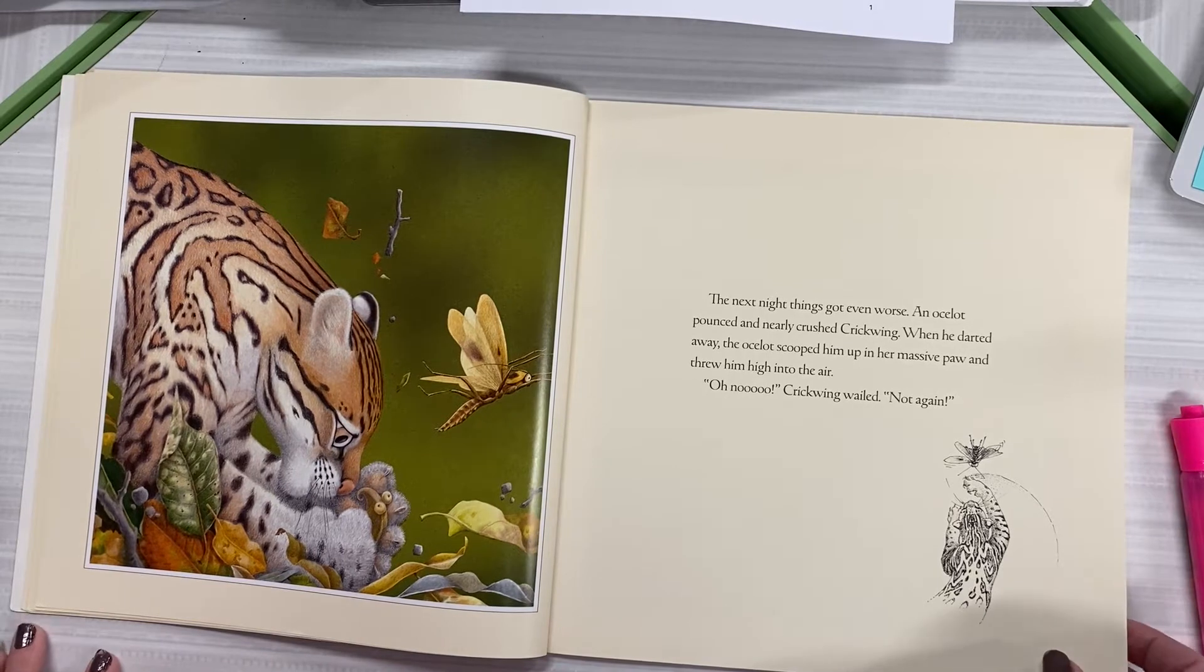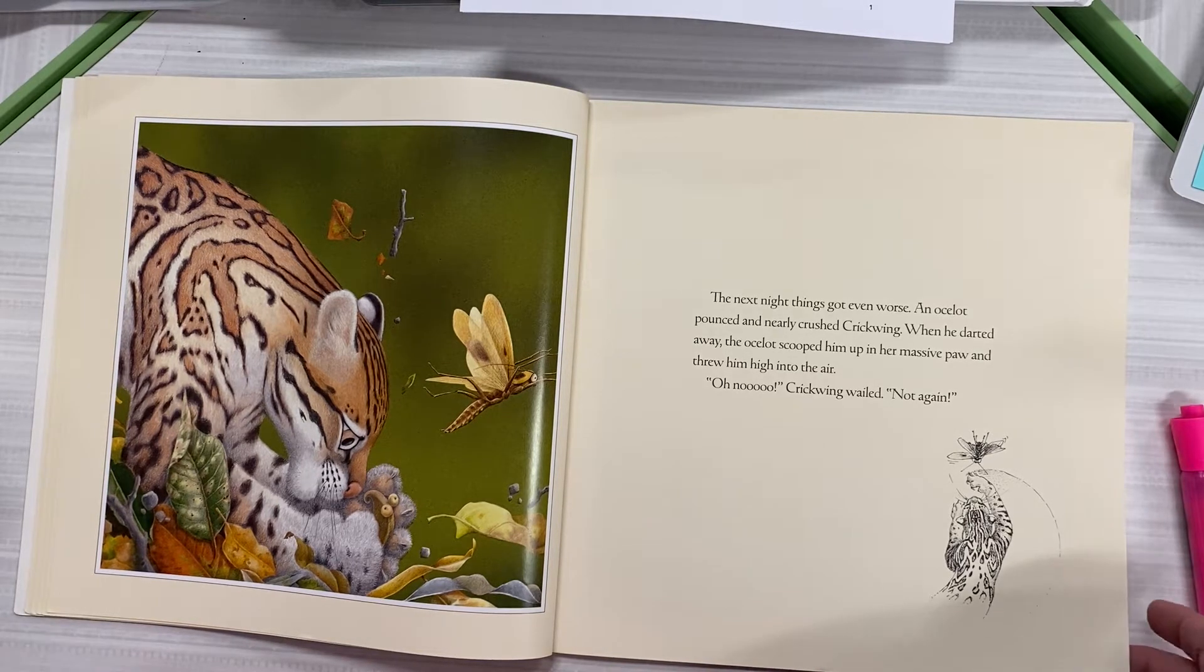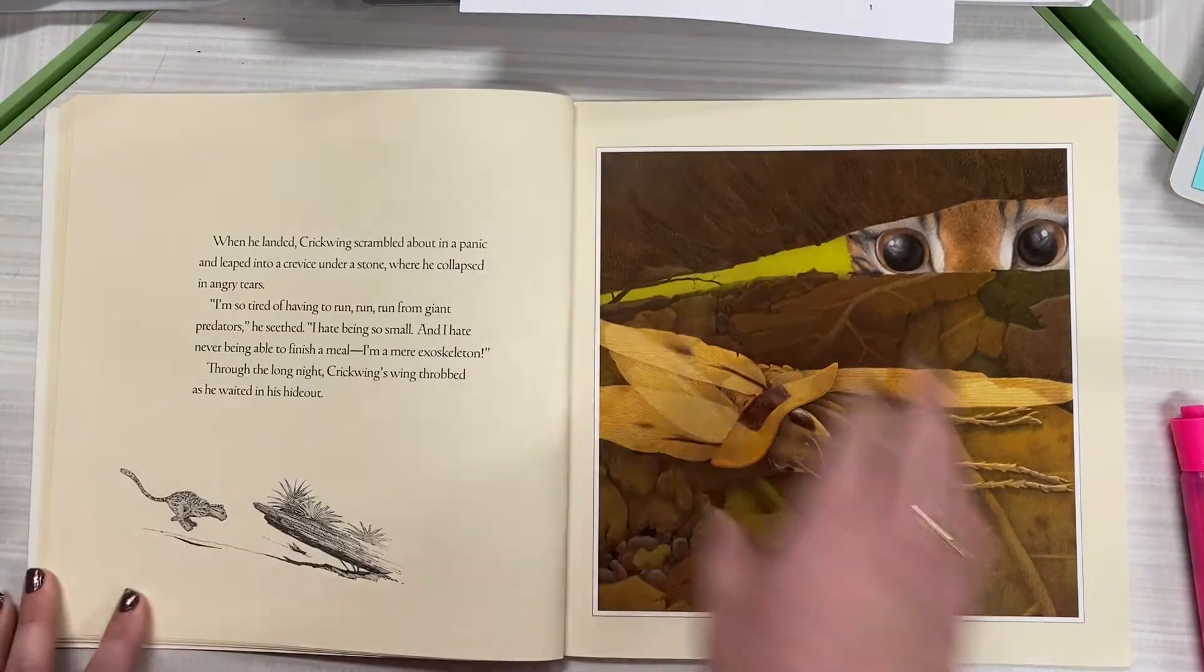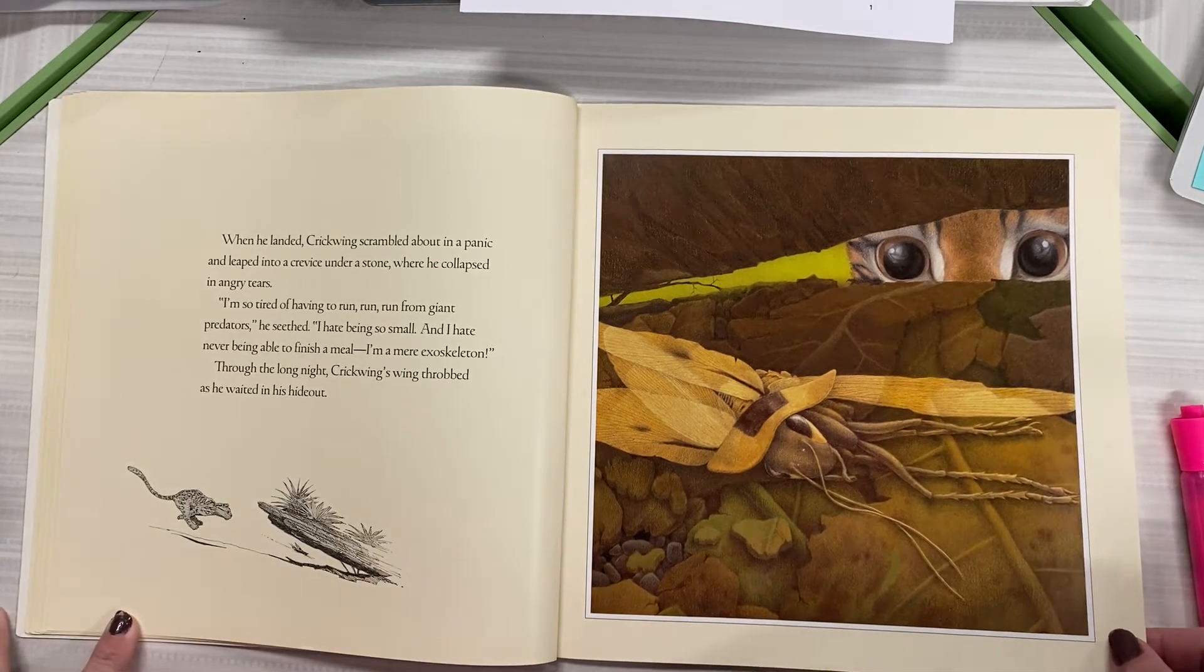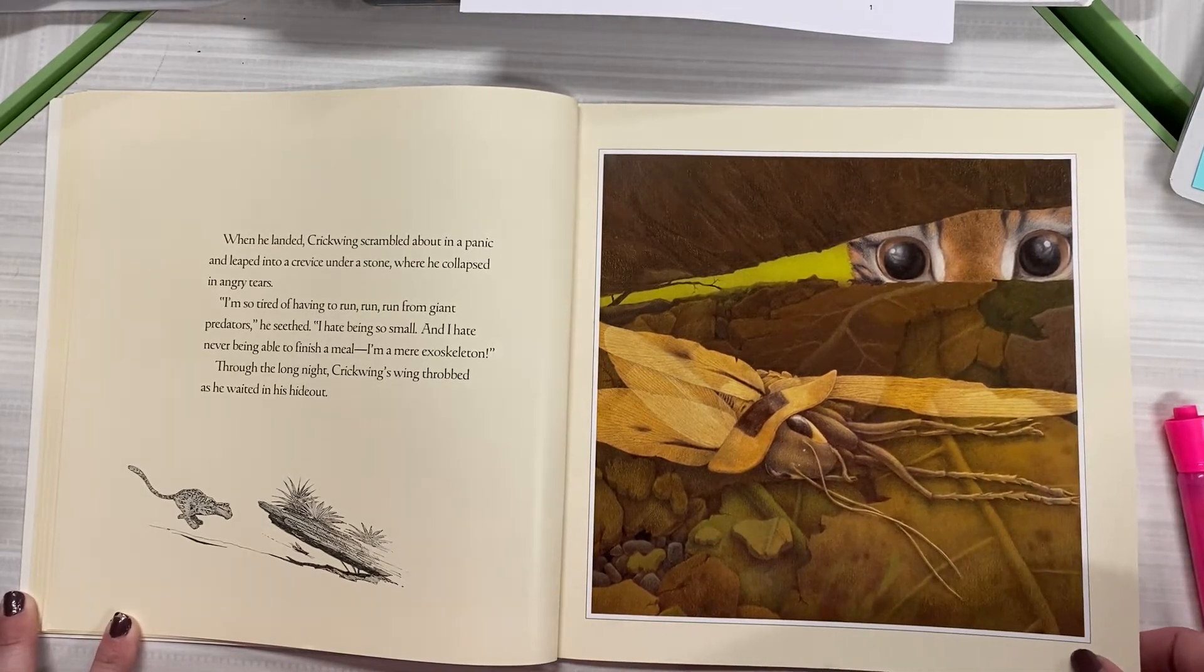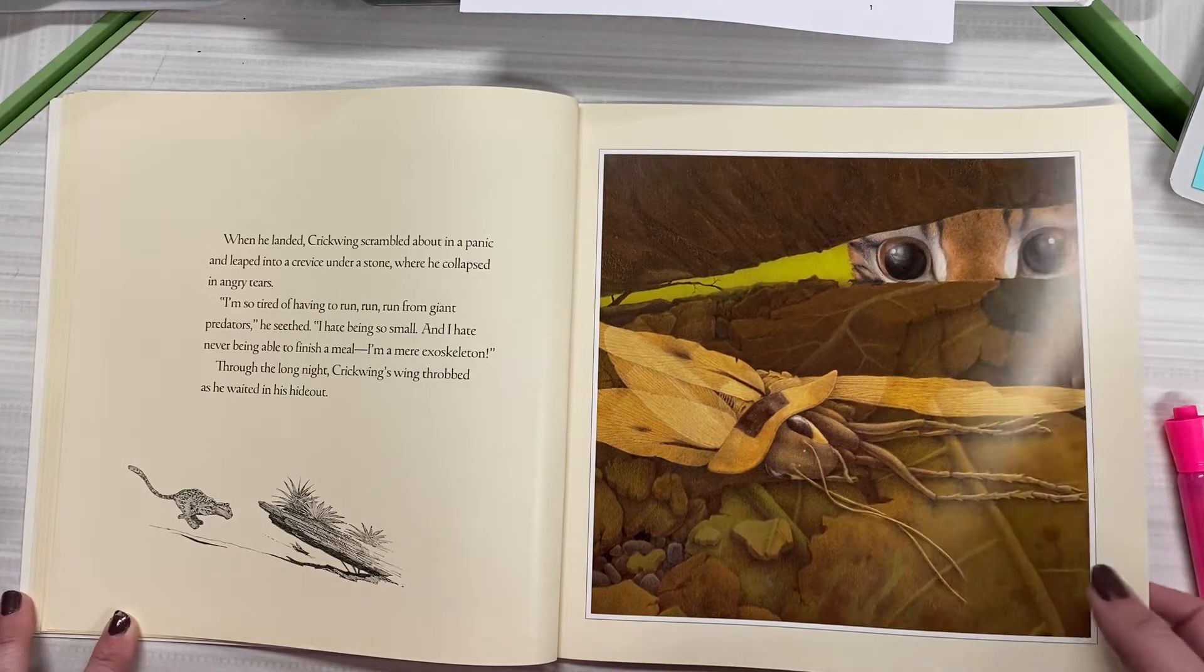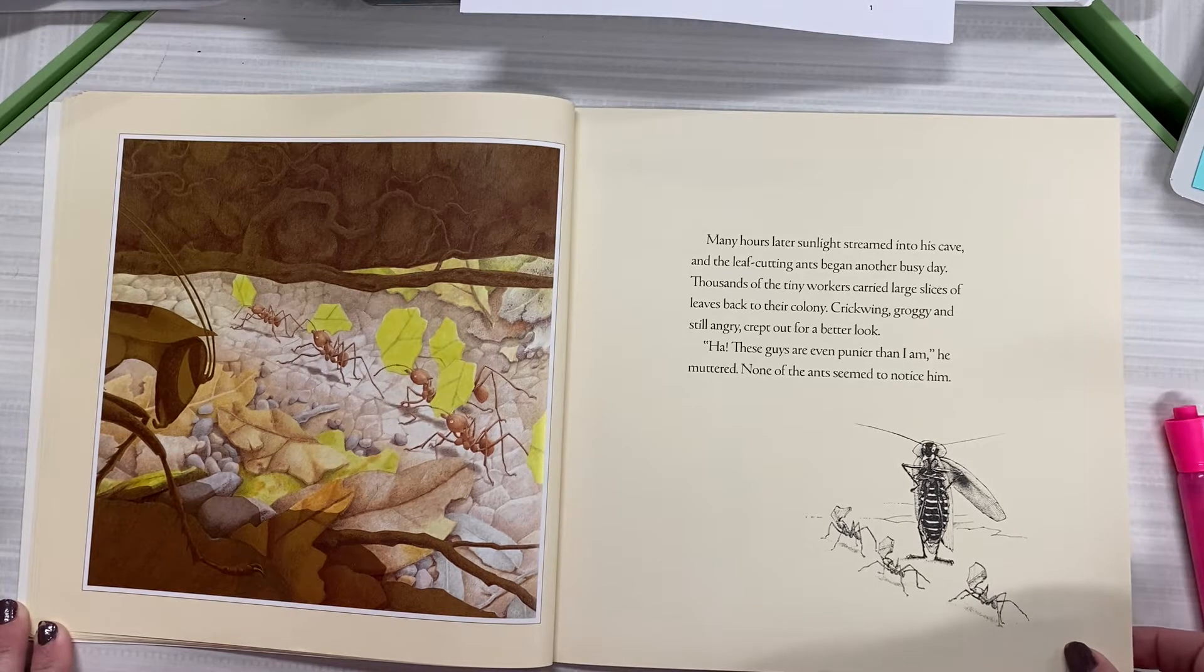The next night, things got even worse. An ocelot pounced and nearly crushed Crickwing. When he darted away, the ocelot scooped him up in her massive paw and threw him high into the air. Oh no! Crickwing wailed. Not again! When he landed, Crickwing scrambled about in a panic and leaped into a crevice under a stone where he collapsed in angry tears. I'm so tired of having to run, run, run from giant predators, he'd seen. I hate being so small and I hate never being able to finish a meal. I'm a mere exoskeleton. Through the long night, Crickwing's wing throbbed as he waited in his hideout.